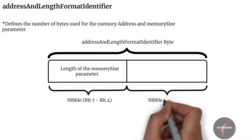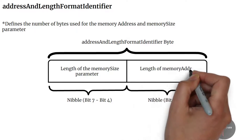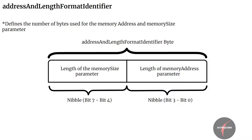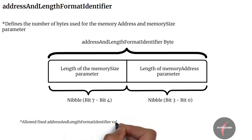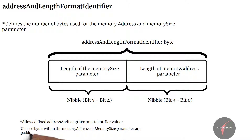Bit 3 to 0 defines the memory address parameter. It is also allowed to use a fixed address length format identifier value, wherein unused bytes within the memory address or memory size parameter shall be padded with value 0x00.